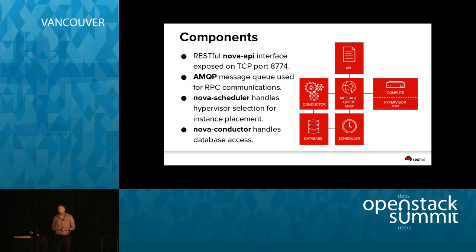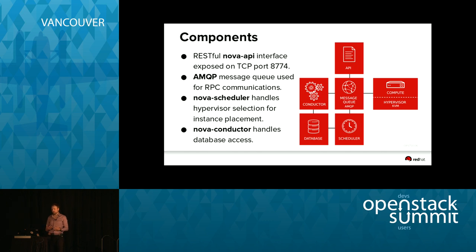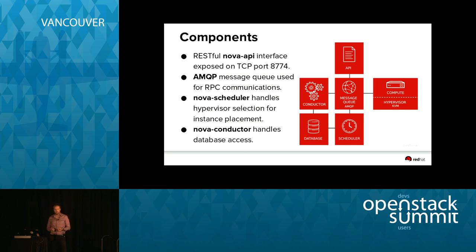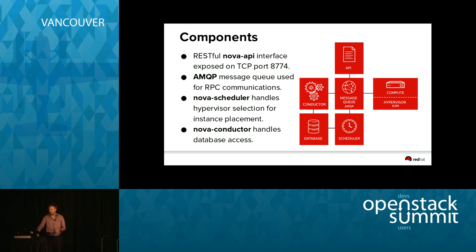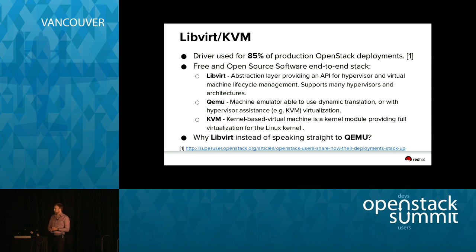Looking at this slide at a high level: we have the Nova API, an RPC message bus for communication between services, the conductor for interacting with the database — which means we don't need database credentials on every single compute node — and the scheduler responsible for placing instances. Primarily today we're focusing on the box to the right, the compute node itself. That is where our instances run. In the LibVirt KVM driver case, the nova-compute service is co-located on the same machine as the hypervisor, the QEMU and KVM processes.